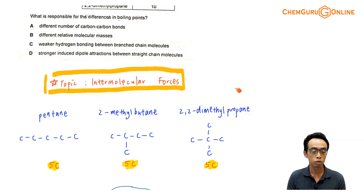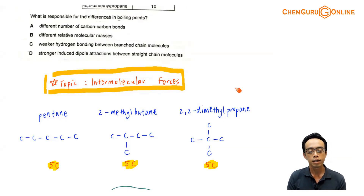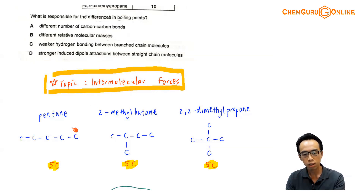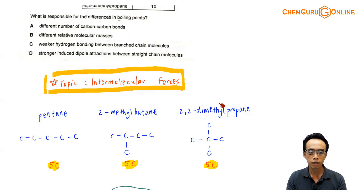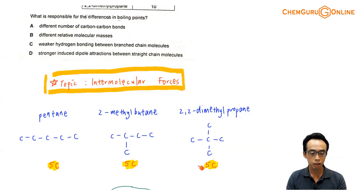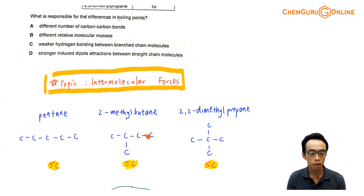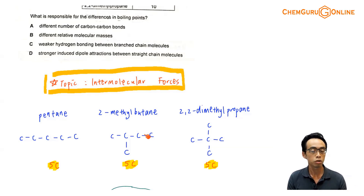In this video, I will refer to this as ID-ID interaction, or ID-ID attraction. Now, if I compare pentane, 2-methylbutane, and 2,2-dimethylpropane, you will notice that they are actually chain isomers of each other, meaning they have the same number of carbon and hydrogen atoms.